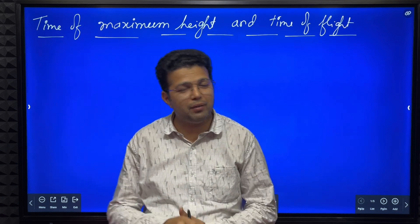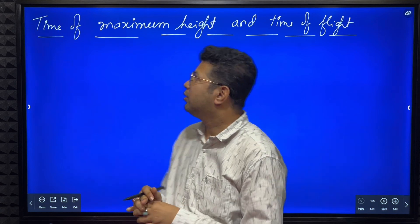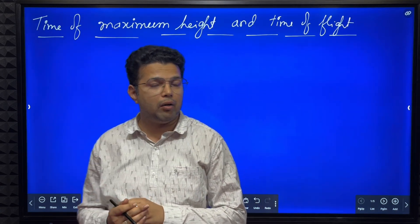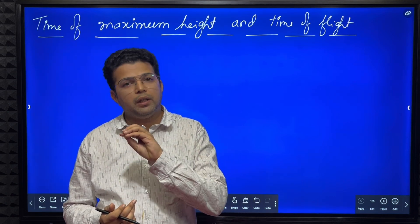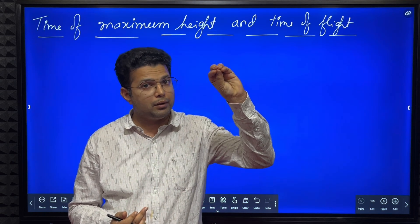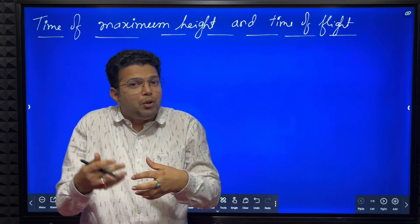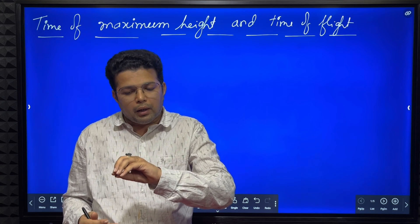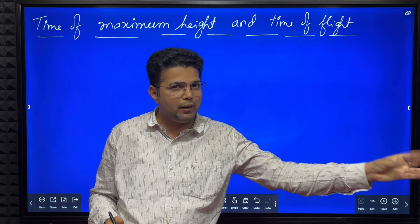Hello dear students, this is lecture 11. In this lecture we calculate time of maximum height and time of flight of a projectile. Time of maximum height is the time required for a projected object to reach its maximum height. Time of flight is the total time during which the projectile is in flight - the time required for the projectile to reach back to the same height.